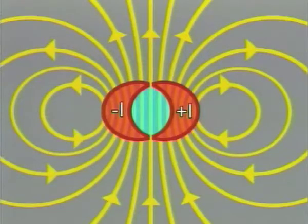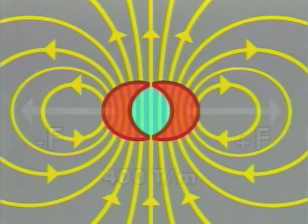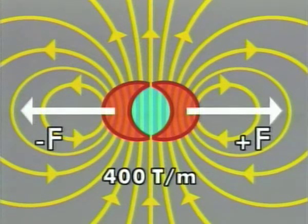The action of the magnetic field on currents minus I and plus I translates into electromagnetic forces minus F and plus F, which tend to open the magnet.